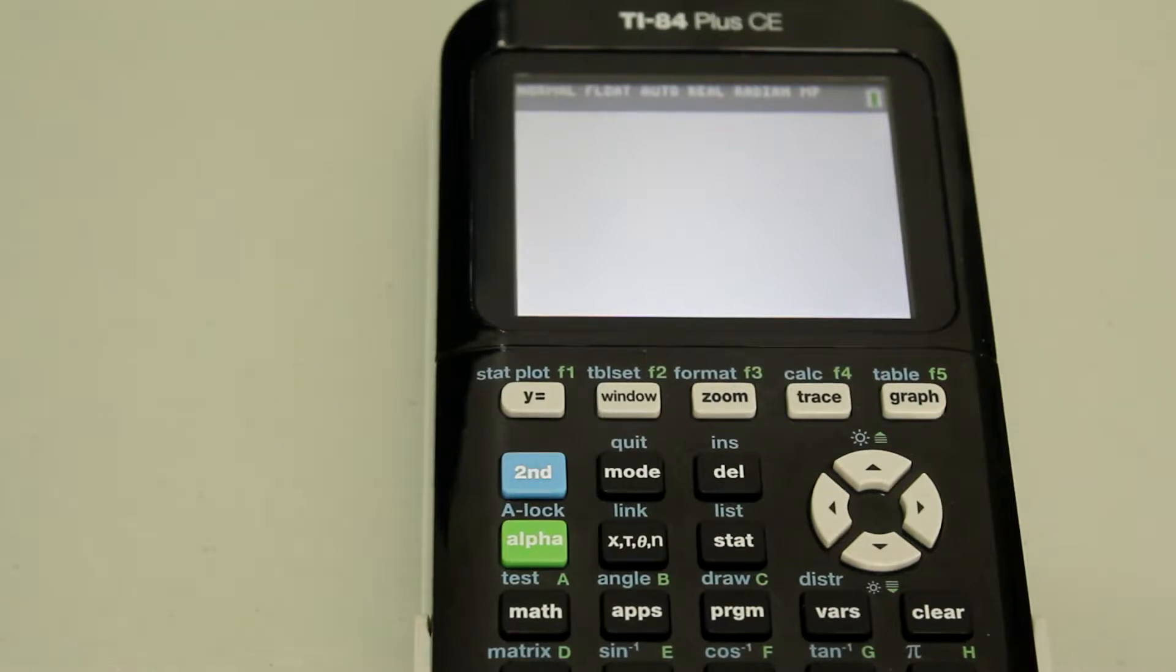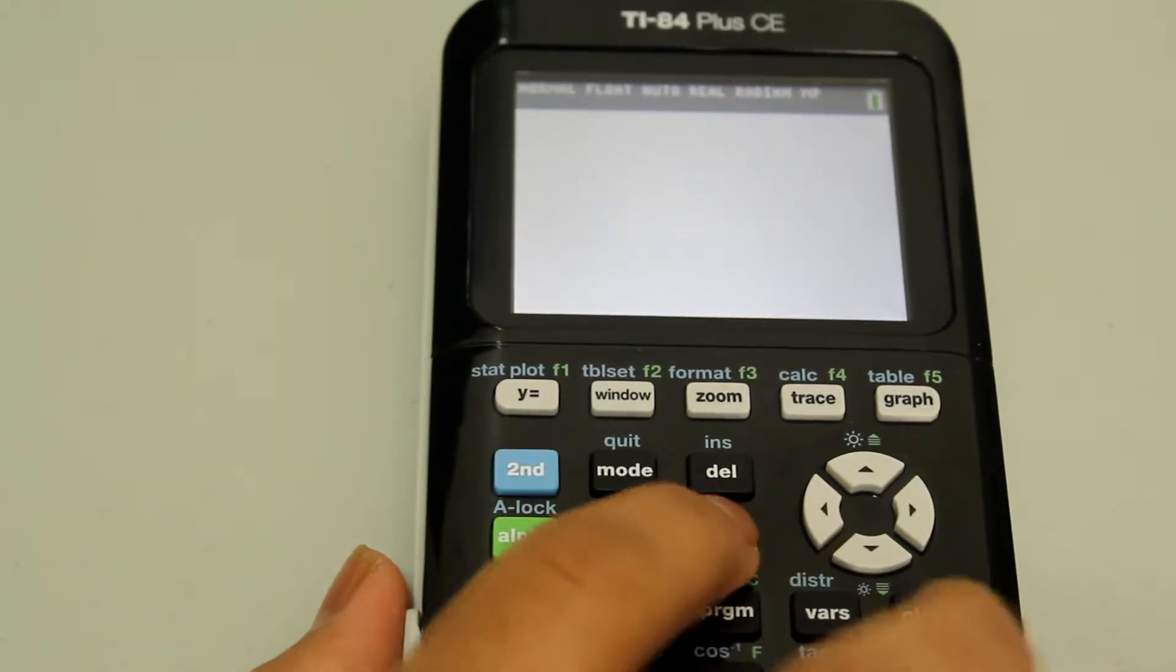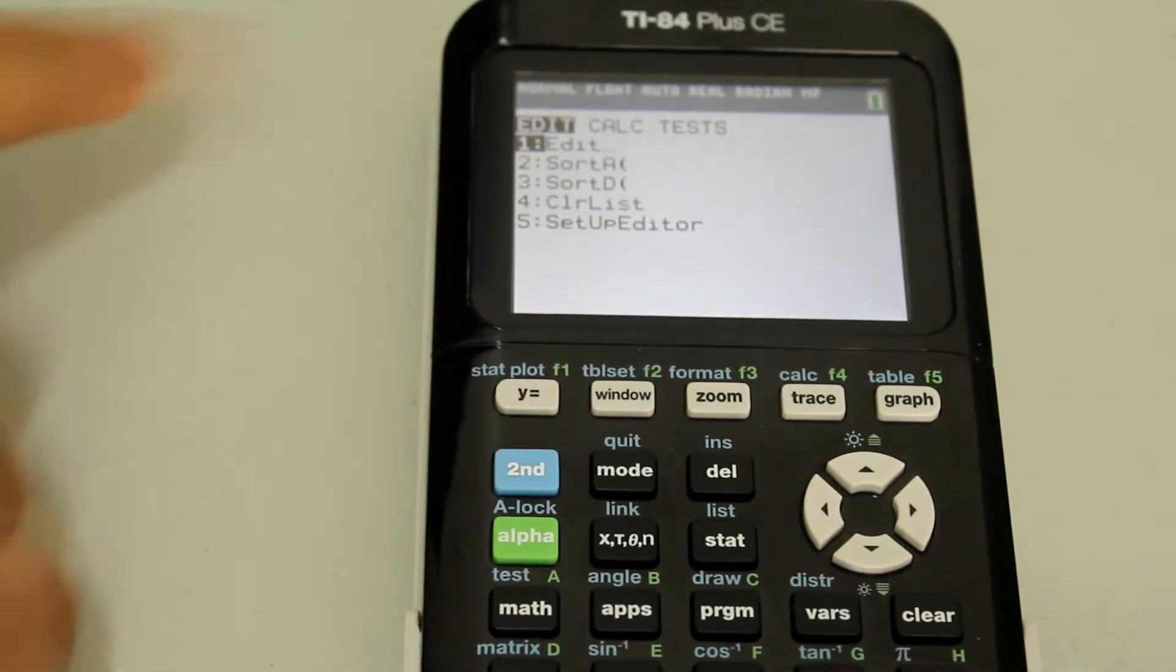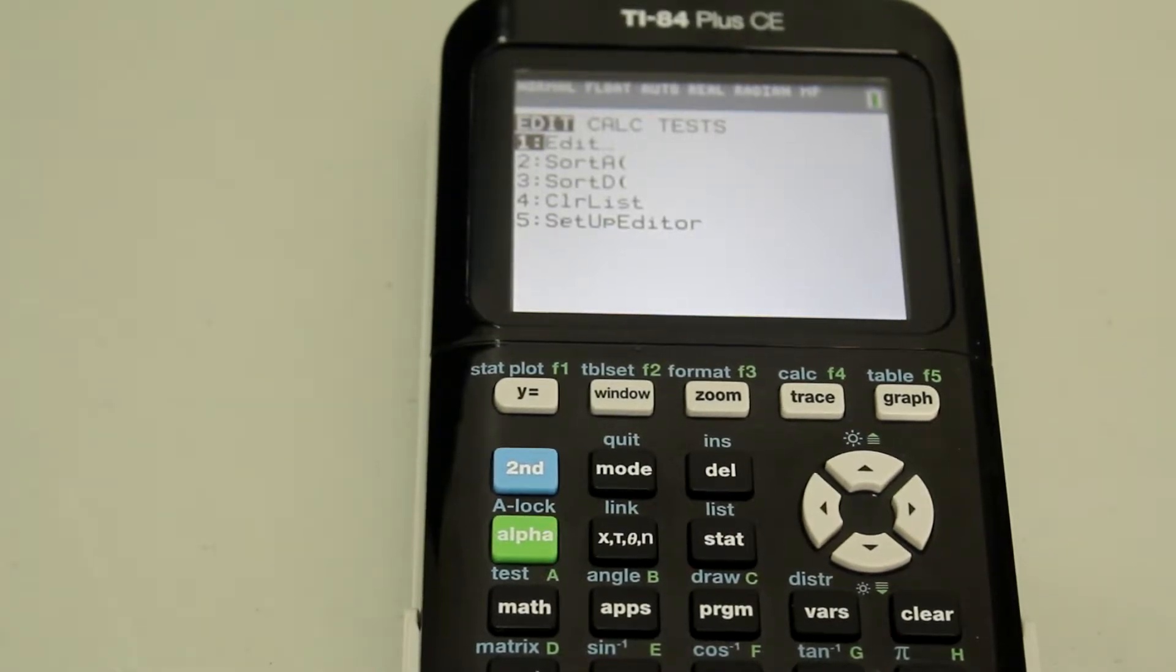In order to plot the points for the quadratic regression, we're going to hit the STAT button right here. Then we're going to select the edit feature, either by hitting the number 1 or just hitting enter since it's the first one.